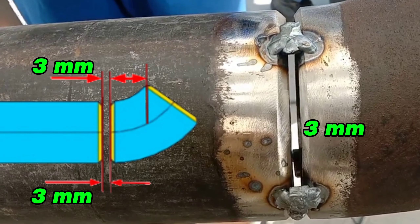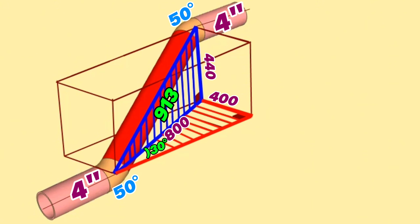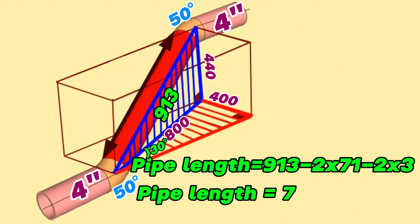Let's start to calculate the red color pipe section length now. Pipe length equals total length 913 millimeters, minus 2 times the 4-inch 50-degree butt-weld elbow dimension of 71 millimeters, and minus 2 times the gap for welding of 3 millimeters. Finally, we calculated and found that the length of the 4-inch red pipe in this pipeline is 765 millimeters.